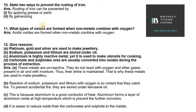To prevent rusting of iron, the first way is greasing, painting, or oiling. The second process is galvanization - coating iron with zinc. When these two methods are applied, the rusting process is reduced. So these are the two ways to prevent the rusting of iron.